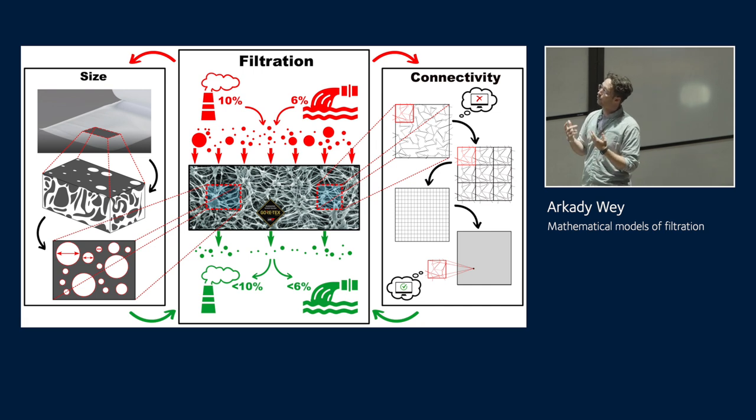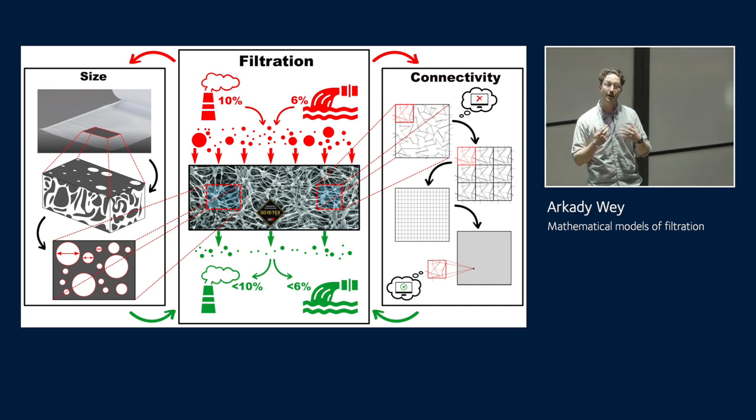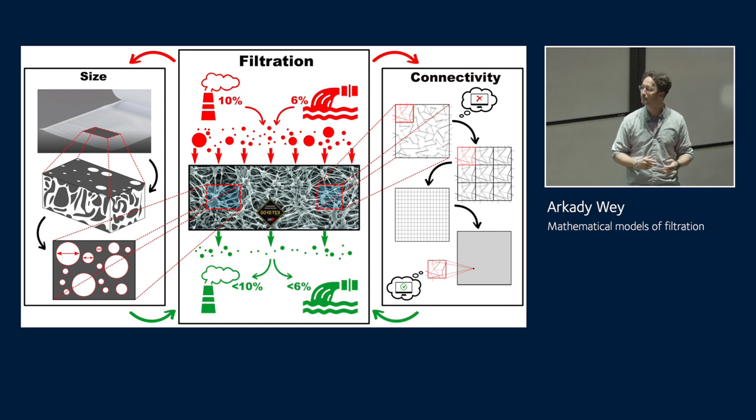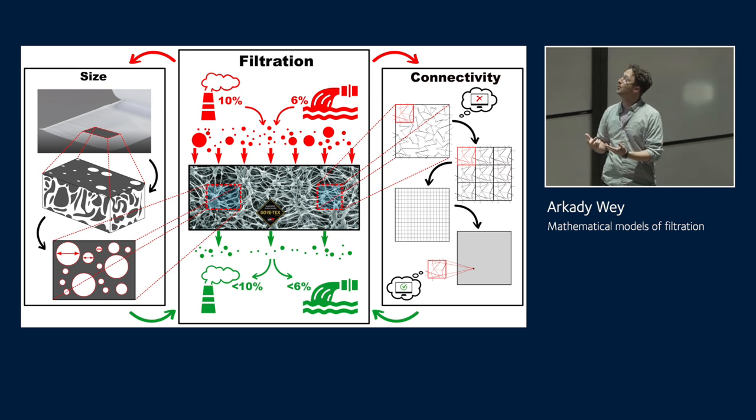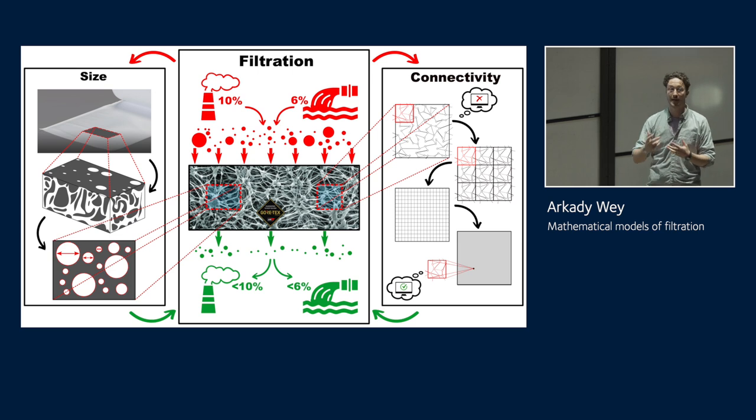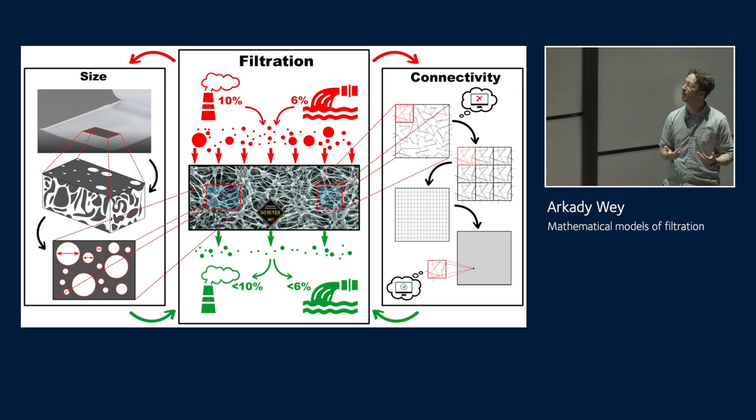I work with a company called Gore, who are famous for the material Gore-Tex, which you might find in your coat, but they also manufacture similar materials for filtration. They're interested in using experiments and math modeling to optimize those materials. The issue is that their models don't really take account for things that are happening on the micro scale, and so they're not particularly accurate. Our job is to try and take into account the micro scale to get some more accurate models.